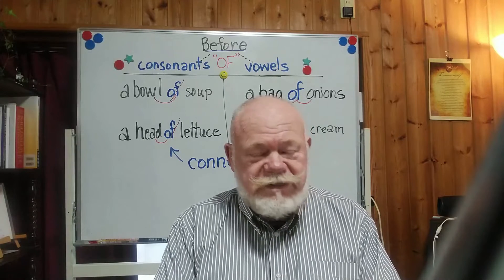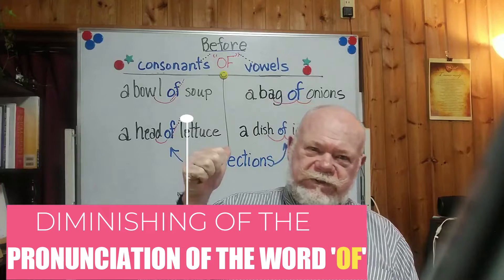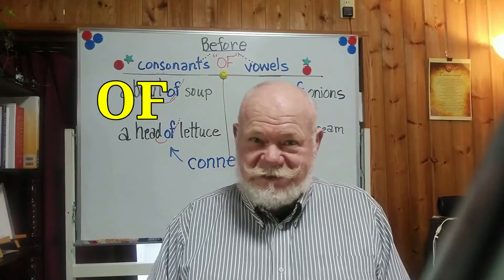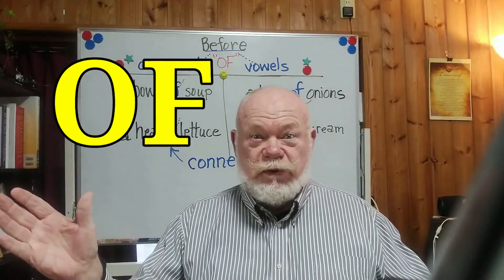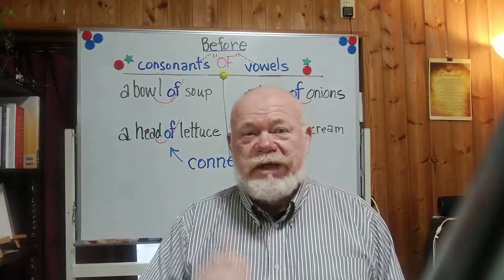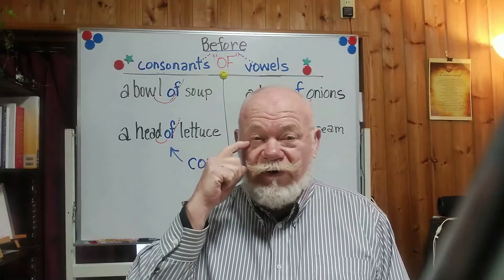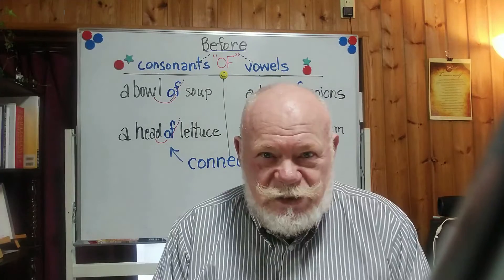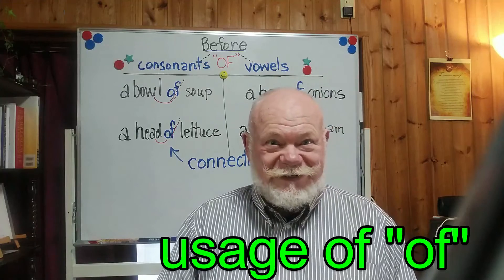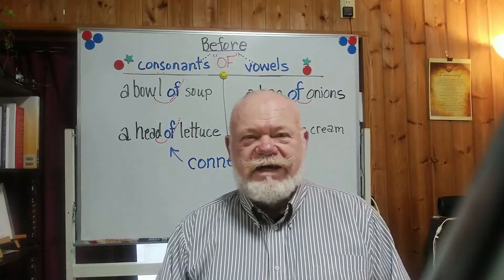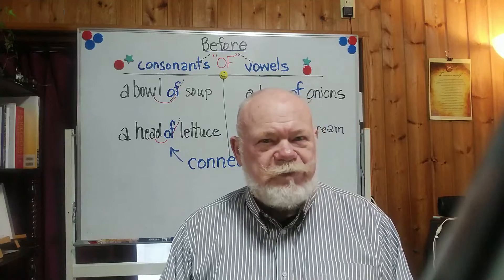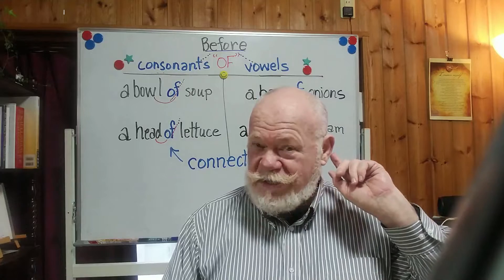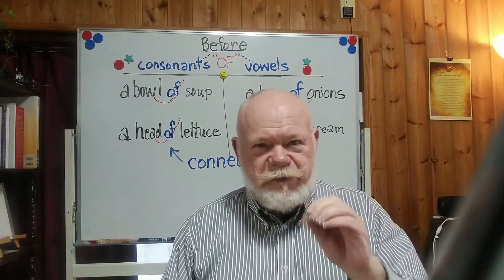Today's English Fluency Tips is about the little word 'of', as you'll see on the board. The preposition 'of' is a big word in a lot of ways because it is used in so many contexts and conversations. But today I would like to share tips about the usage of 'of' with consonants and vowels. This is a pronunciation tip — an English fluency tip for pronunciation — honing your listening skills, ability, and of course speech as well.